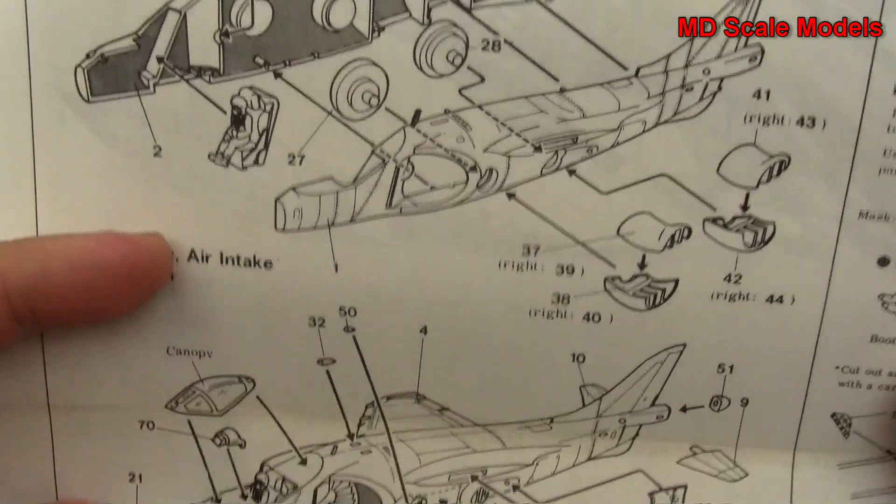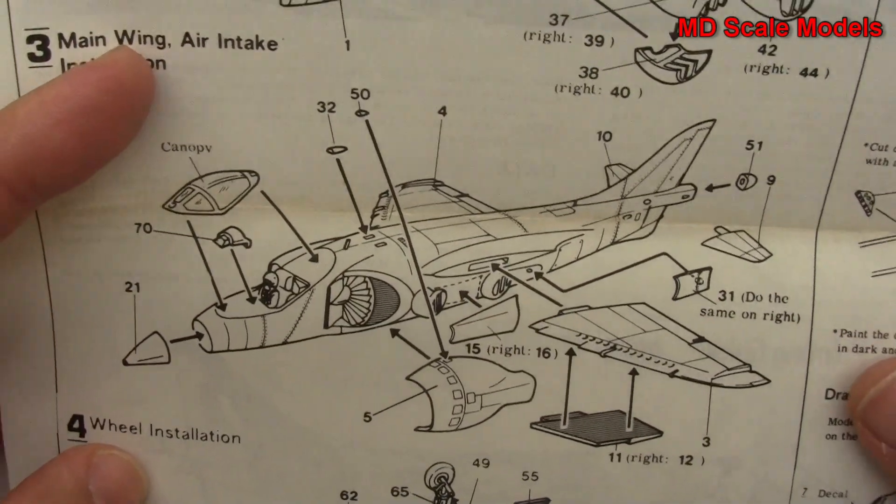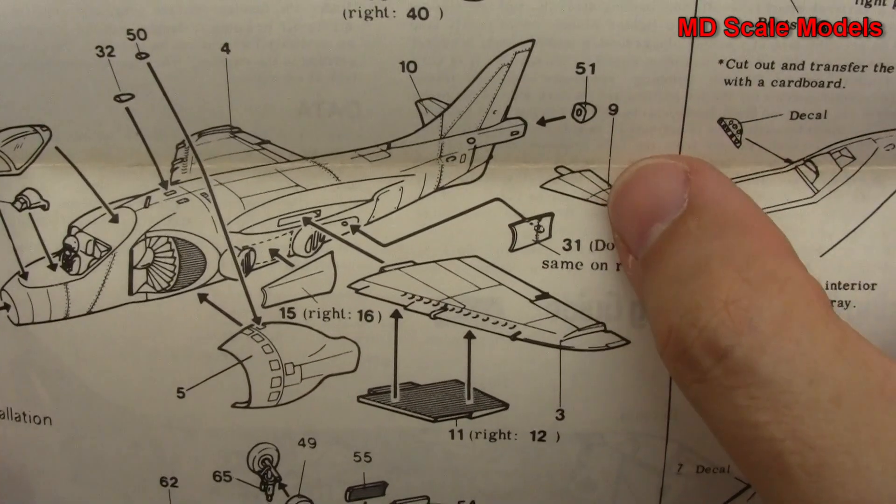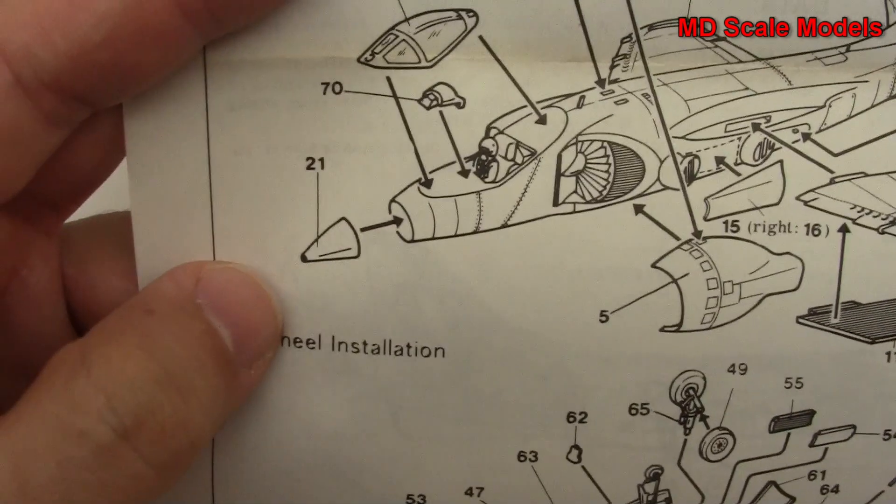Those go with the fuselage, and we mount our wings and put our air entry, as well as our elevators and nose.